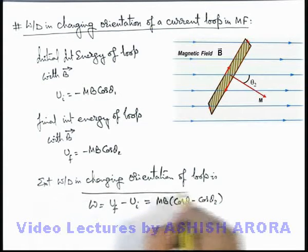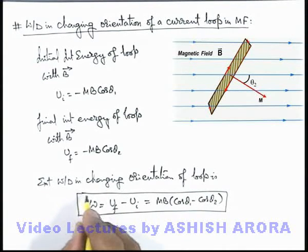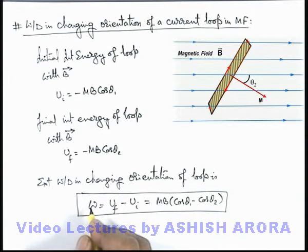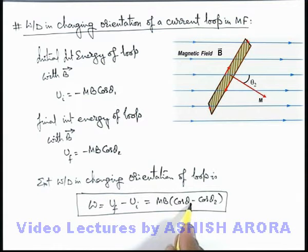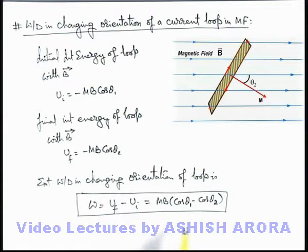This is a very useful relation you should always keep in mind. This is the work done in changing the orientation of a loop in a magnetic field from initial angle theta 1 to final angle theta 2. The same can also be expressed in a different form using magnetic flux. Let's continue on the next sheet.